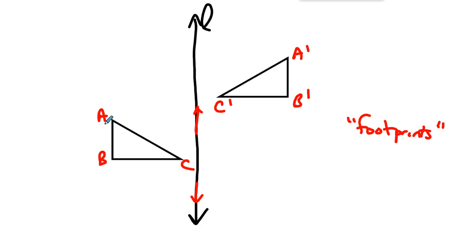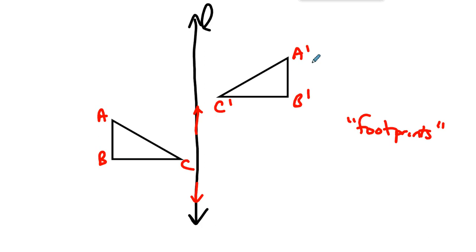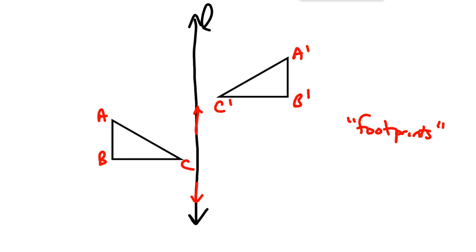ABC is counterclockwise in the original, and A prime, B prime, C prime is clockwise in the image. So we have an isometry — it holds the shape the same: same size, same shape. These two figures are congruent, but the orientation reverses because there's a reflection involved.